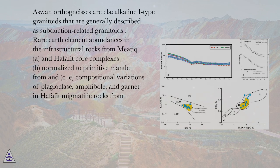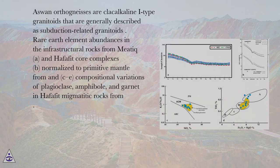Aswan orthogneisses are calc-alkaline I-type granitoids generally described as subduction-related granitoids. Rare earth element abundances in the infrastructural rocks from Metic (A) and Hafafit core complexes (B), normalized to primitive mantle (C), with compositional variations of plagioclase, amphibole, and garnet in Hafafit magmatitic rocks.